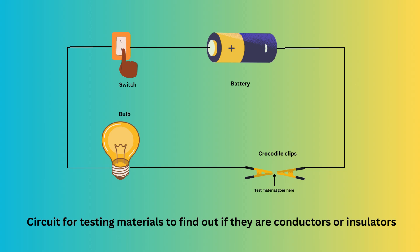Let's look at this diagram. It shows a simple circuit that we can use to test if materials are conductors or insulators. Connect the battery, switch, bulb, and crocodile clips just like in the diagram. Place the material you want to test between the crocodile clips, then turn on the switch to complete the circuit. If the bulb lights up, the material is a conductor because it allows electricity to flow. If the bulb stays off, the material is an insulator because it blocks the electricity.